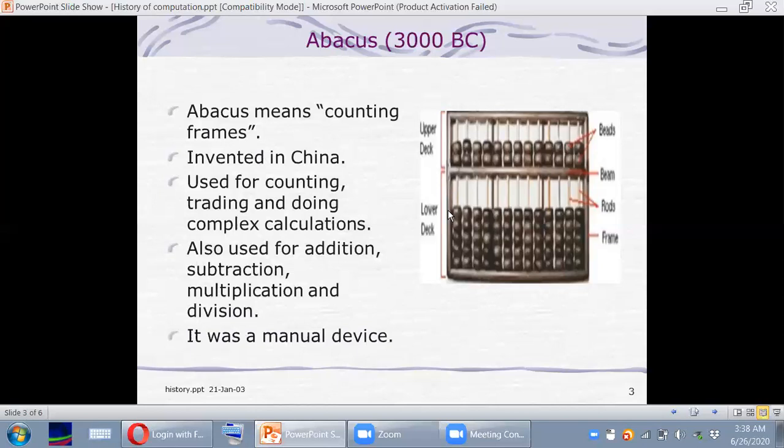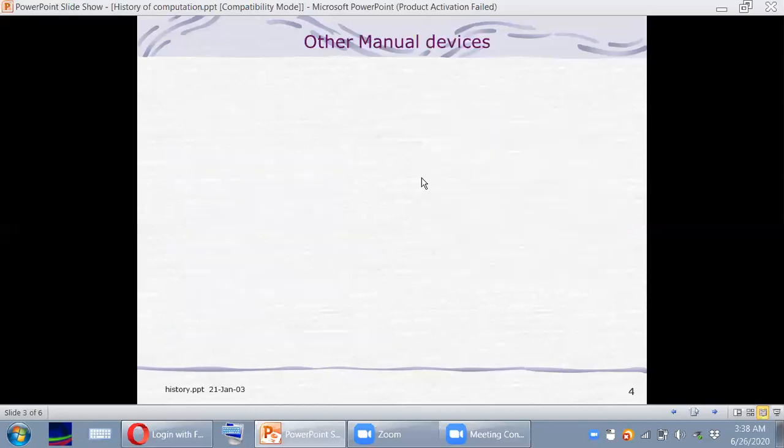And remember that it is a manual device. What does it mean? It means it was powered by humans. Human force was required to run it. So all the devices of dark ages were mainly manual devices. Now there are some other manual devices.